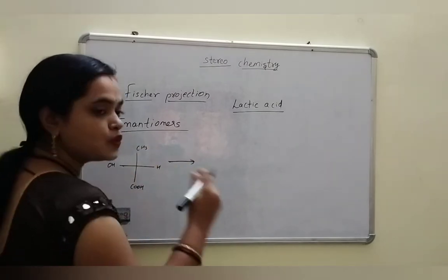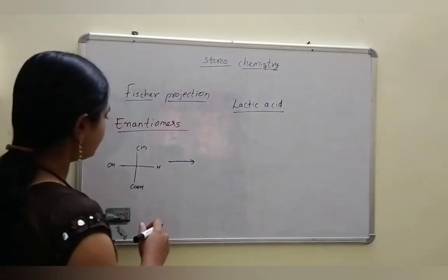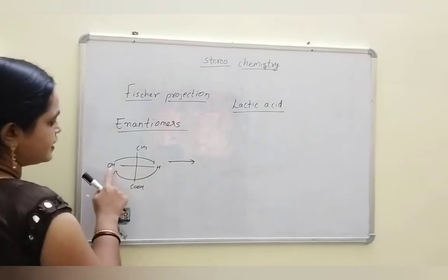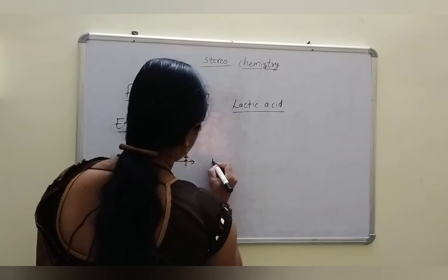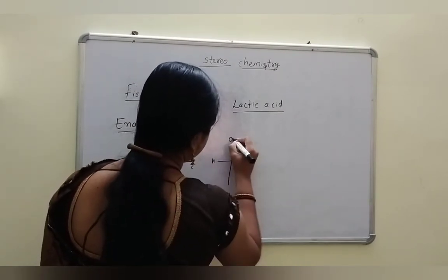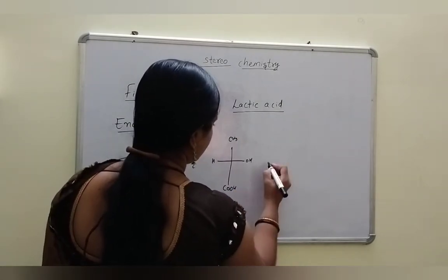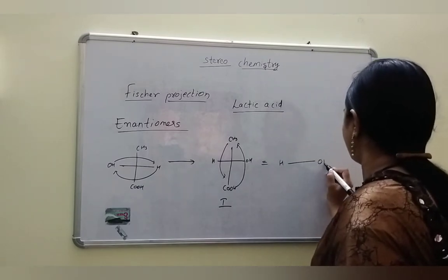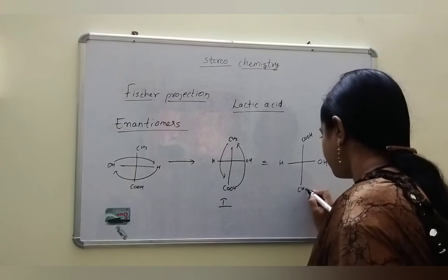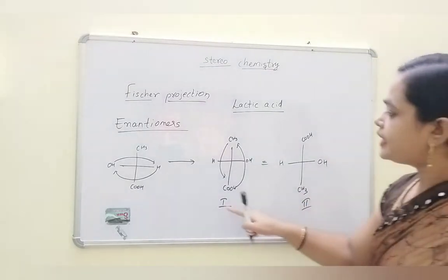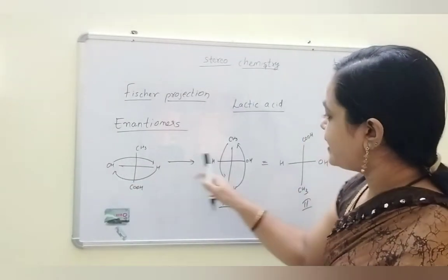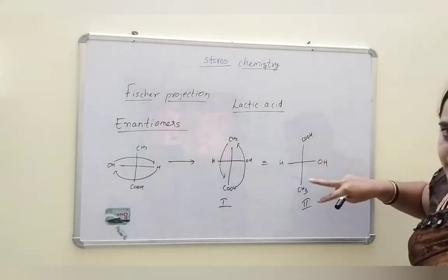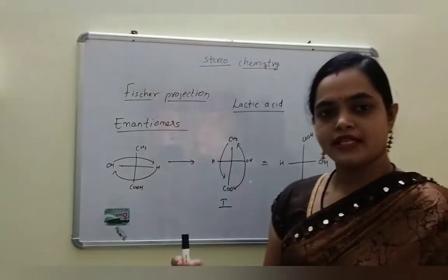When the groups are interchanged, the enantiomers are formed. For example, OH and H are interchanged, so we get the enantiomers. One and two structures are enantiomers of each other — here OH and H are interchanged, that is one enantiomer. In the same way, CH3 and COOH groups are interchanged, so this is another enantiomer. In Fischer projection, enantiomers are formed.